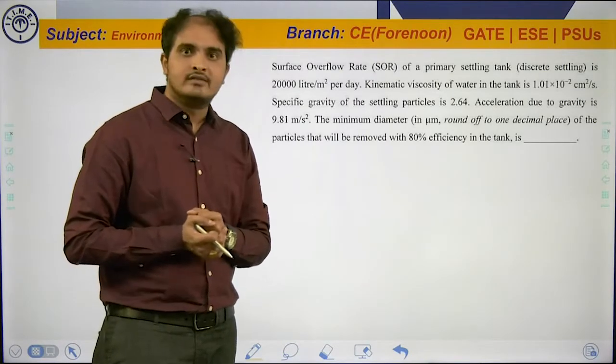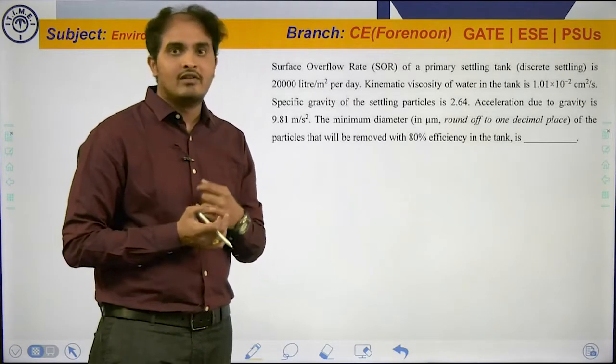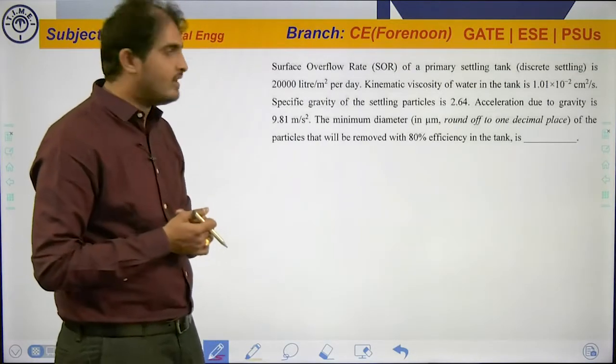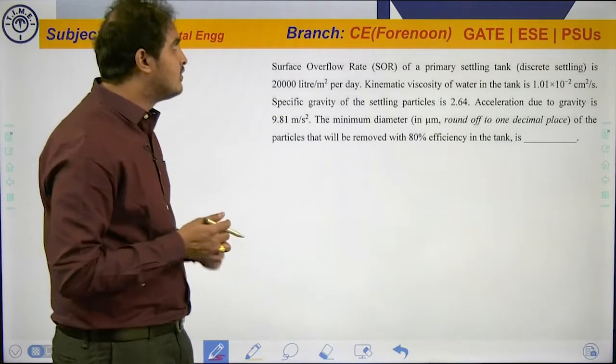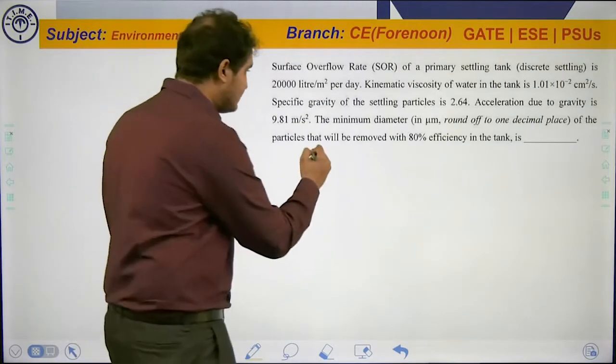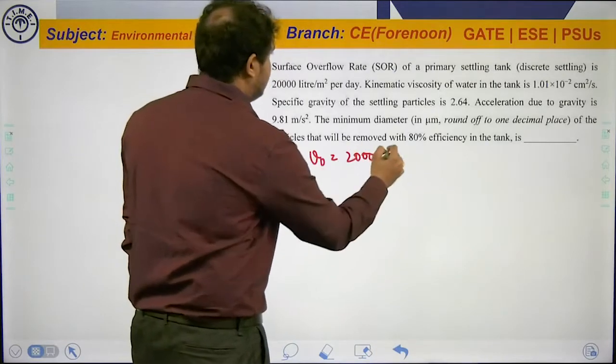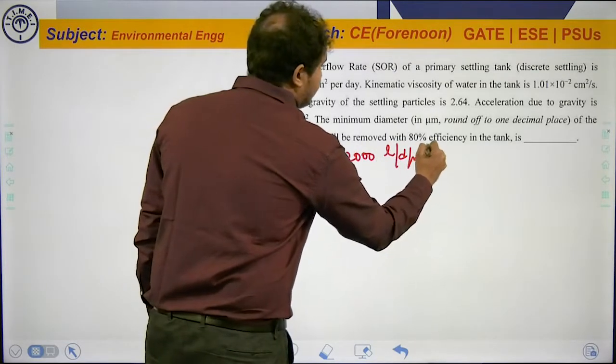Here we start with two more questions from the forenoon session civil engineering paper. The first two questions are from environmental engineering. It is given that the surface overflow rate of a primary settling tank, V0, is given as 2000 liters per day per meter square.